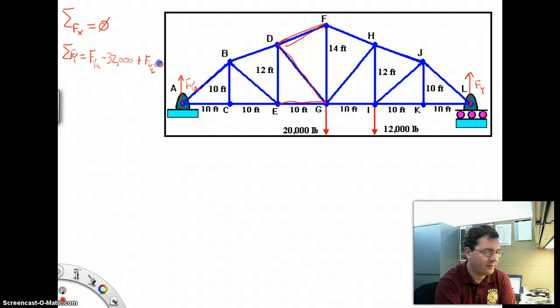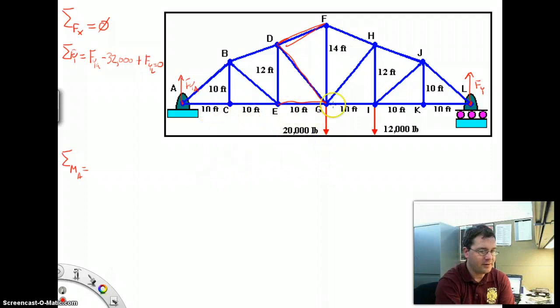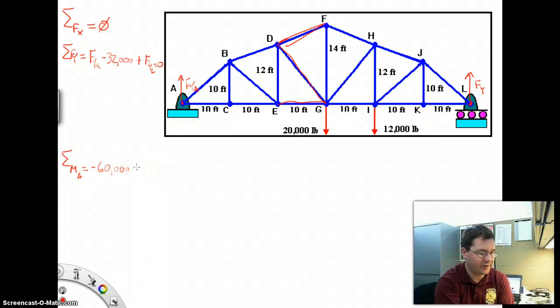And those all have to add to 0. Now, I have to pick a point about which to take moments, and I think point A is a good place to take moments. So the sum of the moments about point A equals - I have this negative 20,000-pound load, and it's 30 feet to the right of point A. This is going to produce a clockwise rotation, which we would consider a negative rotation.